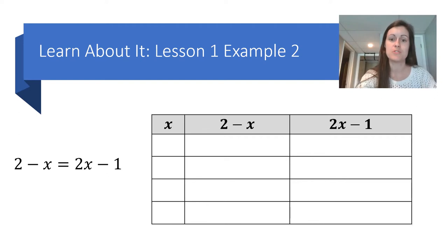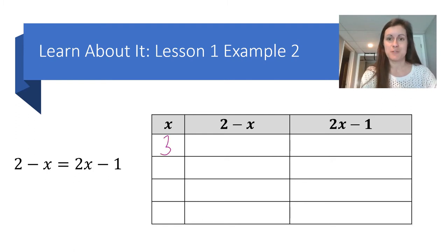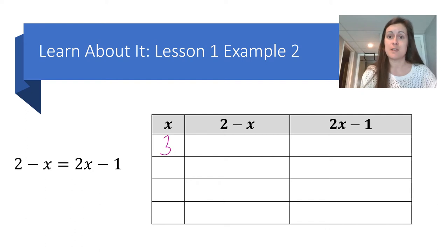This is our first example where we're going to solve an equation by using a guess and check method and organizing that information into a table. The equation that I'm going to solve is 2 minus x equals 2x minus 1. When I'm guessing and checking, I like to pick friendly numbers. So I'm going to start with 3. I'm going to substitute 3 into each side of the equation — into 2 minus x and 2x minus 1 — and evaluate each expression to see if I get the same result. If I do, I know that the value I selected was a solution; if I don't, I need to try again.